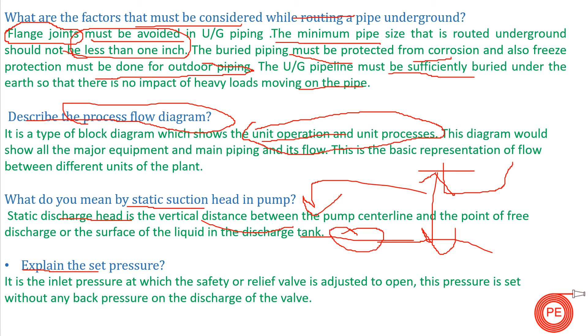Explain the set pressure. It is the inlet pressure at which a safety or relief valve is adjusted to open. The set pressure is the pressure at which your safety valve or relief valve will get opened so that your system doesn't get damaged in case of overpressure or the pressure exceeds the design pressure of the system. This set pressure is without any back pressure on the discharge of the valve.